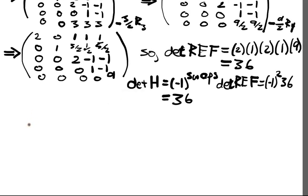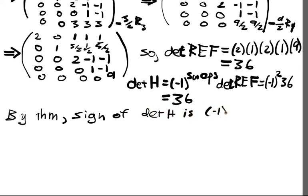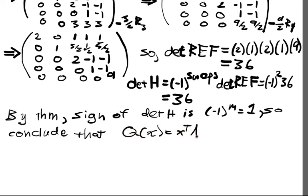Well by the theorem, the sign of the determinant of H is negative 1 to the M is equal to 1. So it has a positive sign. So we conclude that Q of X equals X transpose A, that A matrix we had, is positive definite on BX is equal to 0. And that's the general idea of how you will apply something like this.